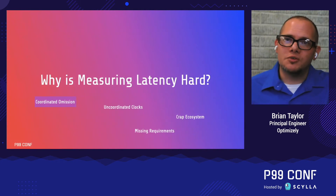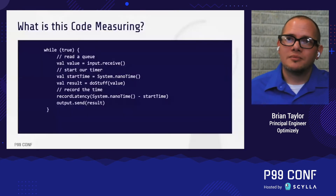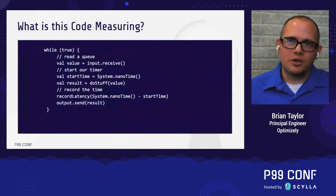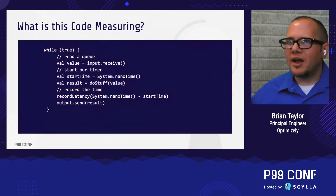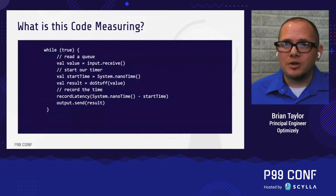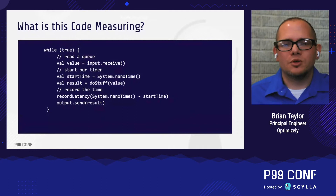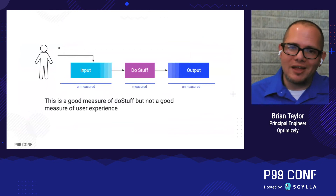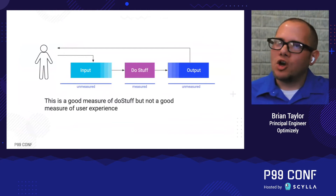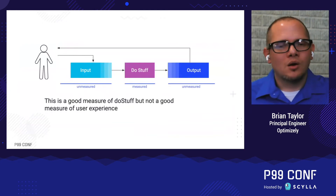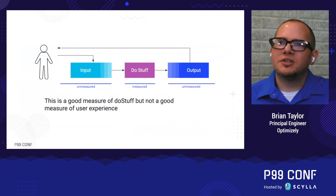The main issue I want to talk about today is coordinated omission. Let's start with a simple example. What is this code measuring? We pull some information off the queue, we start a timer, we do some kind of operation — maybe it takes significant time, maybe not — and then we stop our timer and record the latency measurement. Then we send the result back to the user. So pictorially, the thing we're measuring is how long it took to do that internal operation. We are not measuring how much time the request spent in the input queue waiting to get to us, nor how long it took for our result to get back to the user.